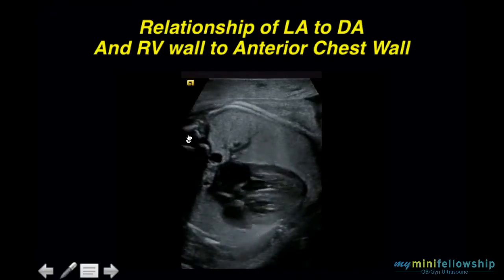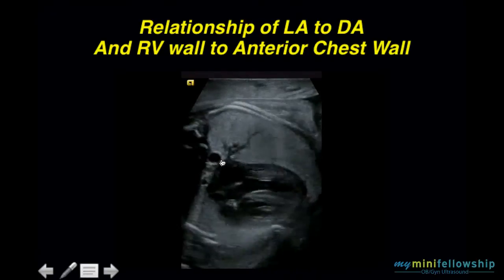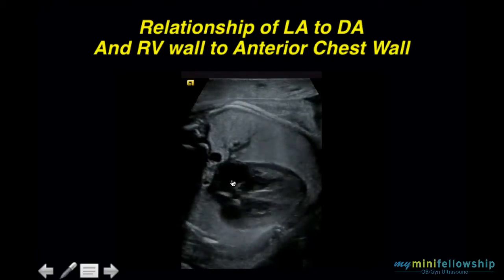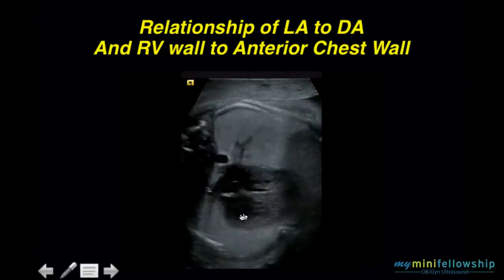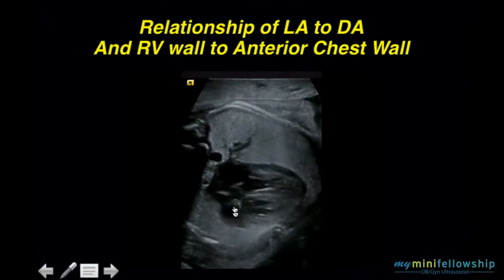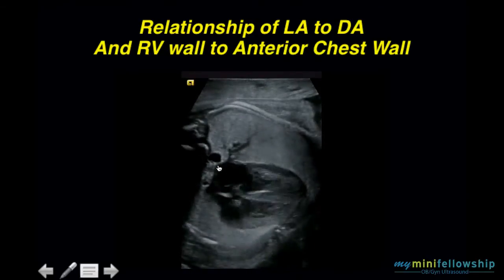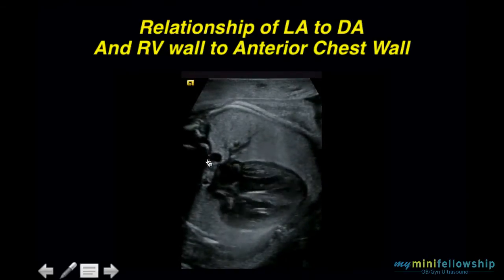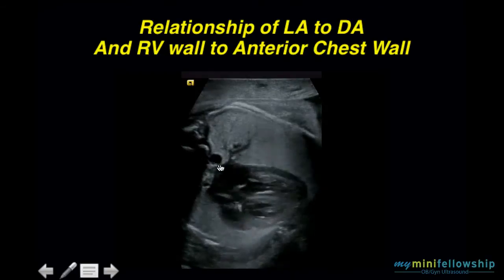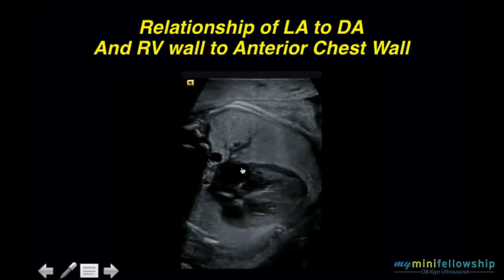Here we have spine, descending aorta, left atrium, left ventricle, right ventricle, right atrium. We identified the left atrium because of its proximity to the descending thoracic aorta.